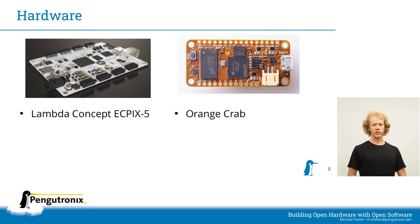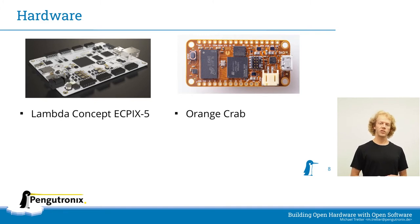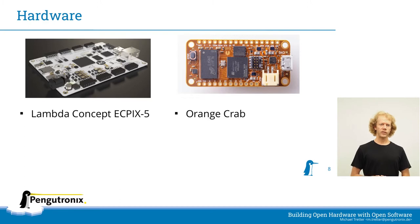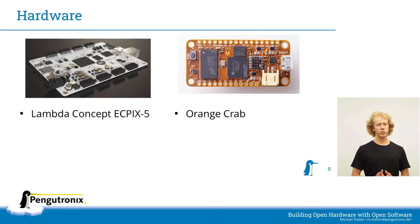Our main development is now happening on a LambdaConcept ECP-IX5 board. The board also features an ECP5, but in a variant that is a lot larger than the FPGA on the OrangeCrab, has 512 MB external RAM, and a separate power supply. Furthermore, it has built-in USB interfaces for JTAG and serial, which makes integration to our lab a lot easier. For the remainder of the talk, I will focus on these boards because these are the only ones I have actual experience with.